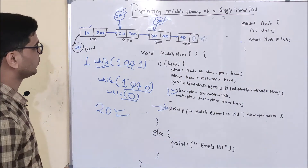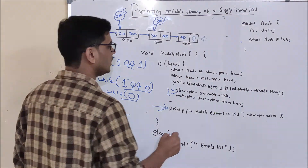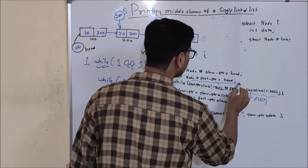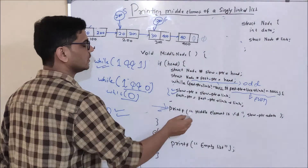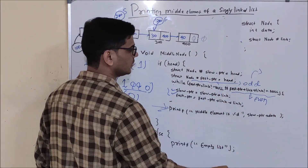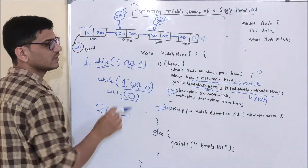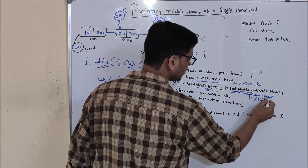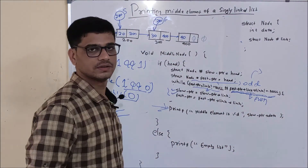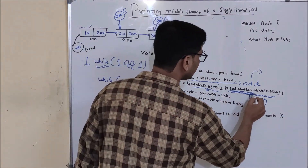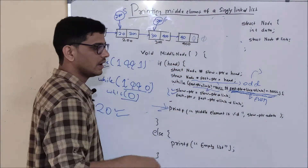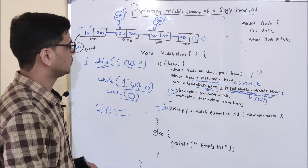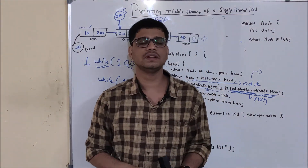This is how we print the middle element of a singly linked list. When we have an odd number of elements, fast pointer dot link will be null when we reach the middle. When we have an even number of elements, fast pointer dot link dot link will be null at that point. Also, you should not write the second condition check before the first one — think about why. If you liked this video, leave a like, share, and subscribe. Thanks for watching.